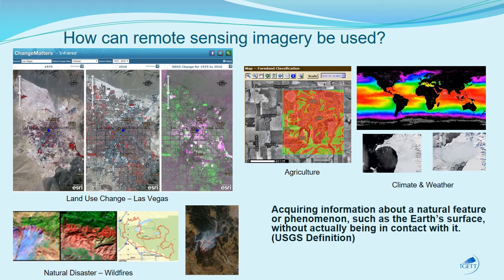This happens to be Las Vegas — you can see it was quite a bit smaller in 1975 than it was in 2010, and I can look at the difference, the greening of Las Vegas before and after — it actually got greener. Agriculture uses remote sensing for precision agriculture: you can look at water use, fertilizer use, pesticide use, and make educated decisions on how your crop is doing. We use it for weather, day to day, and for climate, long-term changes. It's also used in natural disasters — here's a wildfire, so you can use it before, during, and after.